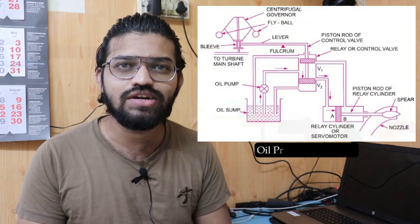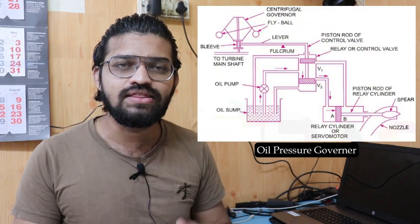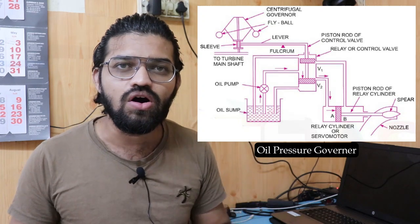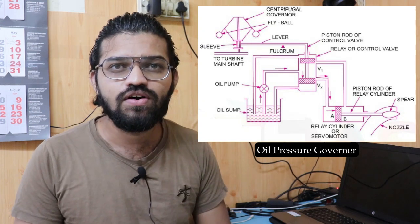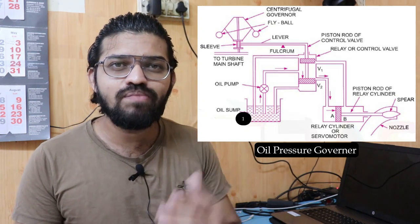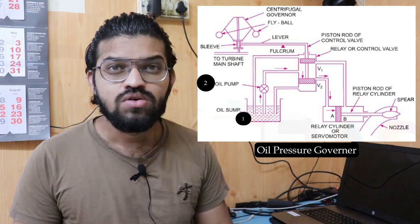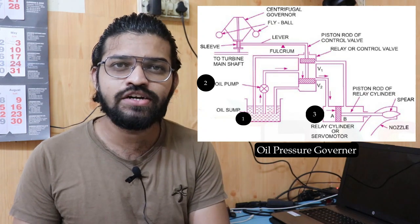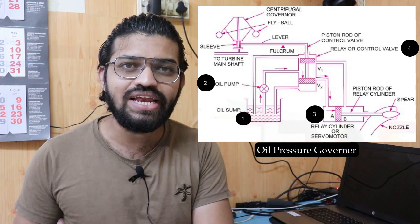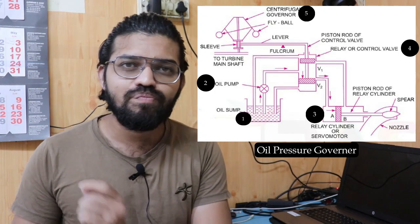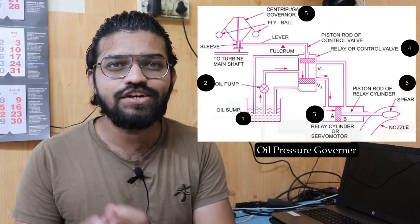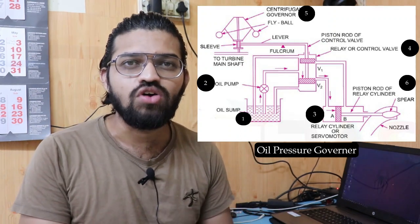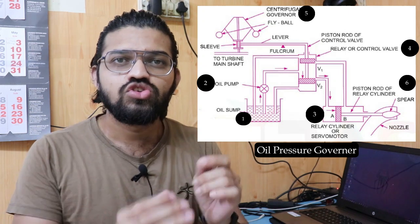To govern the angular speed of the Pelton wheel turbine, an oil pressure governor is used. This oil pressure governor consists of: an oil sump, oil pump, servo motor or relay cylinder, control valve, distribution valve or relay valve, centrifugal governor or pendulum, different piping arrangements, the spear rod, and the needle.